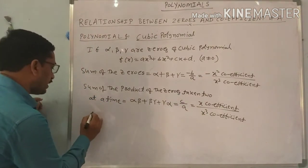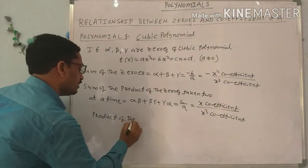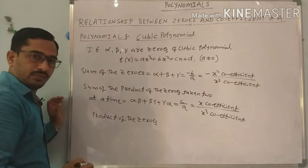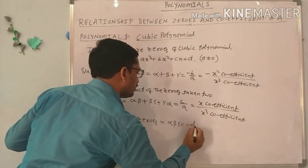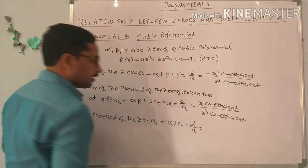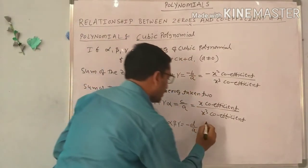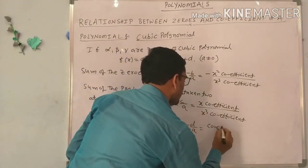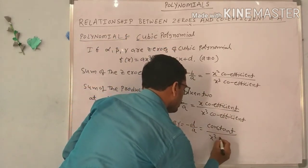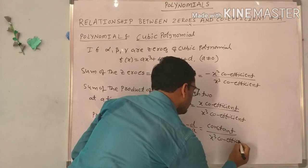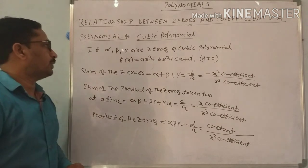And the last relation: the product of the zeros alpha into beta into gamma equals minus D by A, where D means the constant term and A means X cubed coefficient. This is the relation between the zeros and the coefficients of a cubic polynomial.